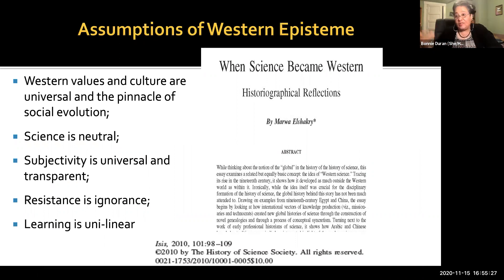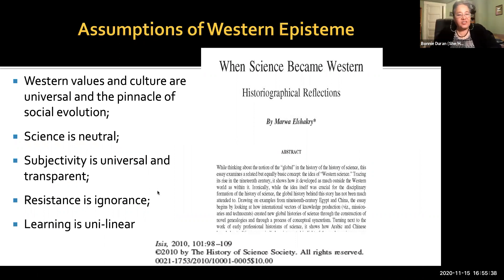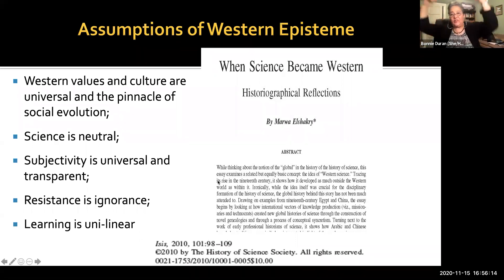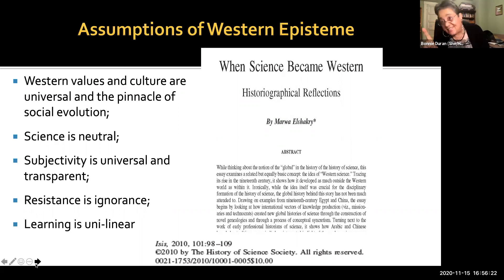So everyone else around the world needs to look like what the West looks like. That science is neutral — personally, I think science is neutral, but scientists are not neutral. And that subjectivity is universal and transparent — thinking that the Western mind could absolutely determine what other people were thinking or what they should be thinking, if they weren't so primitive or uncivilized. And that anyone who resisted being consumed by Western epistemologies or ways of knowing was just too ignorant to know what was really best for them. And that learning is unilinear — it comes from the West to the rest, rather than multidirectional. And all of these are one of the reasons why Western scientists are having issues.